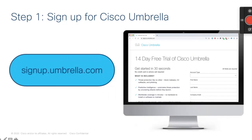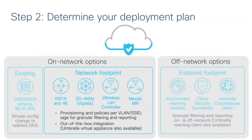Next, you'll need to figure out the deployment plan for your organization. You can deploy Umbrella across your corporate network using your existing DNS or DHCP servers, routers, or wireless access points. We also have a number of built-in integrations across Cisco and partner devices to make deployment easier. For off-network coverage, there are several options for deploying to laptops and mobile devices. We'll talk today about how you can deploy to Windows or Mac machines, Apple iOS devices, and Chromebook. We also have a client for Android devices currently in limited availability — reach out to your Cisco account manager if that's of interest.